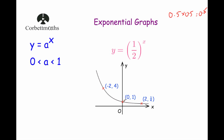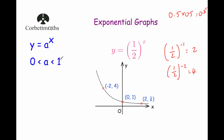On the left-hand side, the graph will be going upwards. If we had a half to the power of negative 1, that's the reciprocal of a half, which is 2. If we had a half to the power of negative 2, that's the reciprocal of a half squared, which is 4, and so on. So if we go to the left, the graph will be increasing. This is what the graph of y equals a to the power of x looks like when a is between 0 and 1.